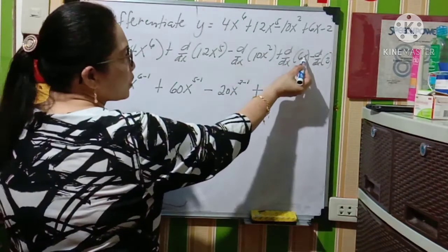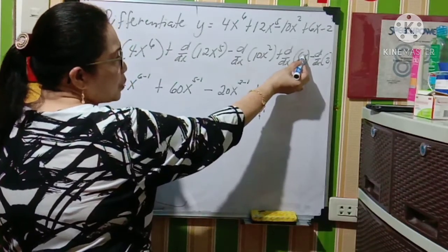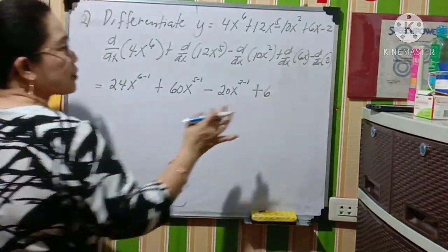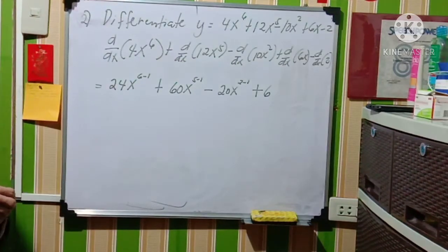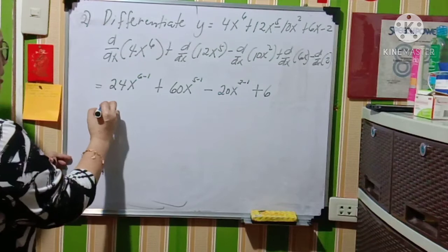Plus the derivative of 6x. So we substitute 1 using the identity rule, giving us 6 minus 0. So you don't need to write 0 there. So let us simplify our exponent.